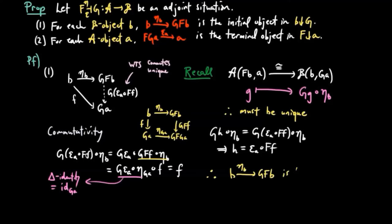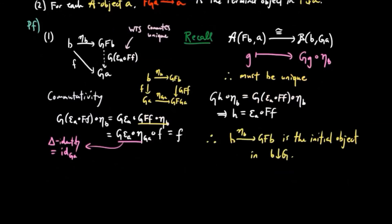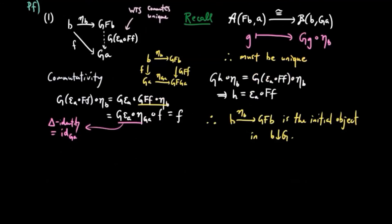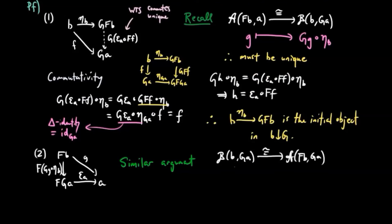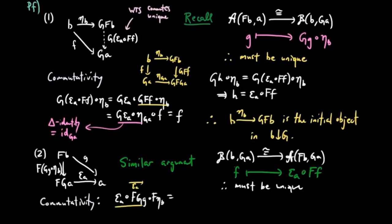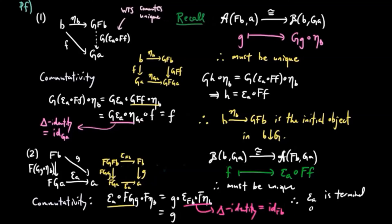Therefore, eta_B is the initial object in B over G. For the co-unit, the argument is completely analogous and we will skip it. You can pause the video to follow the arguments if you'd like. And that completes the proof.